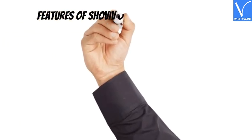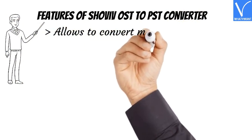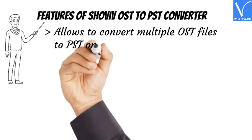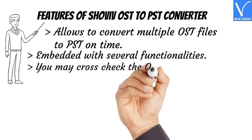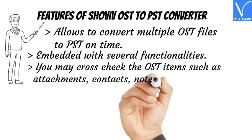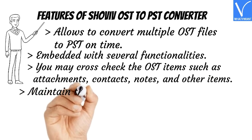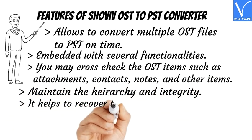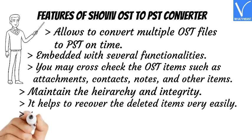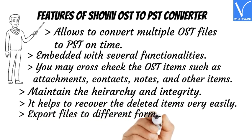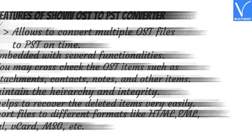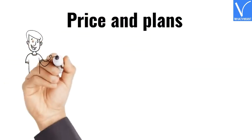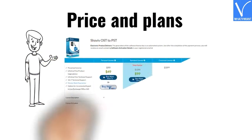Features of Shaviv OST to PST Converter: Allows converting multiple OST files to PST at one time. Embedded with several functionalities, you may cross-check OST items such as attachments, contacts, notes, and other items. Maintains the hierarchy and integrity. Helps to recover deleted items very easily. Export files to different formats like HTML, EML, vCal, vCard, MSG, etc. The price and plans of Shaviv OST to PST Converter are exhibiting on the screen.